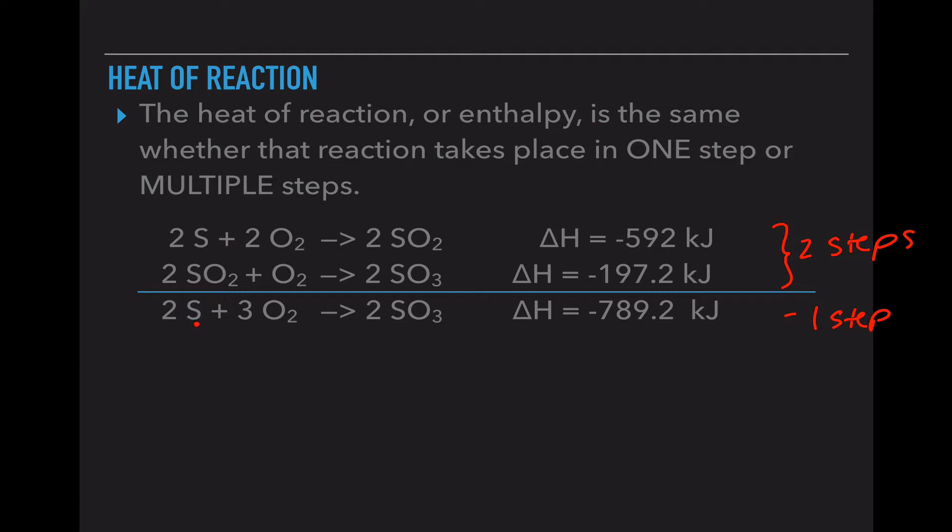So it creates sulfur, oxygen, and sulfur trioxide as our final product. This first step, getting the sulfur dioxide, releases 592 kilojoules.